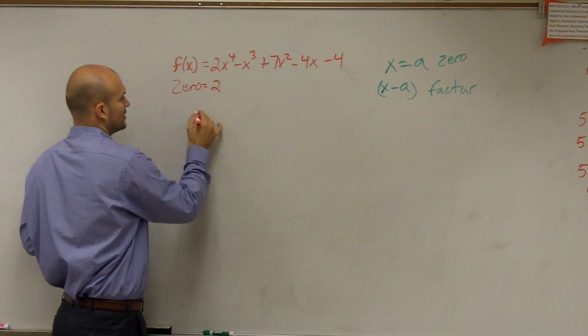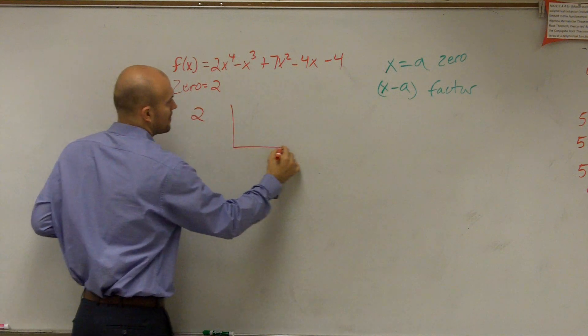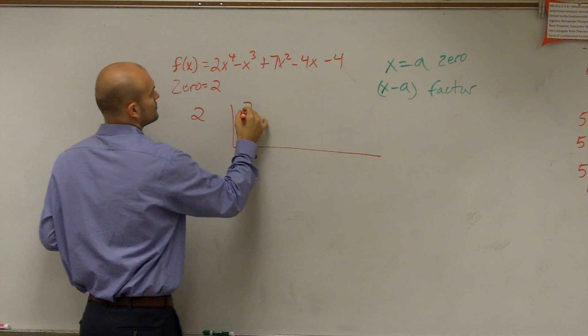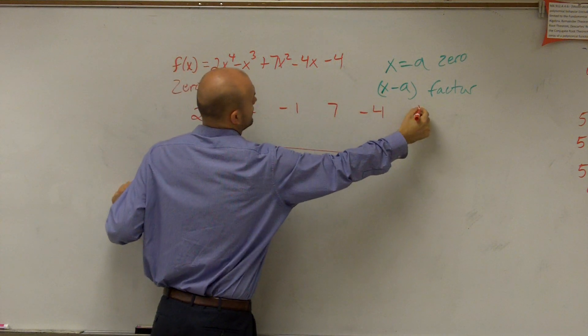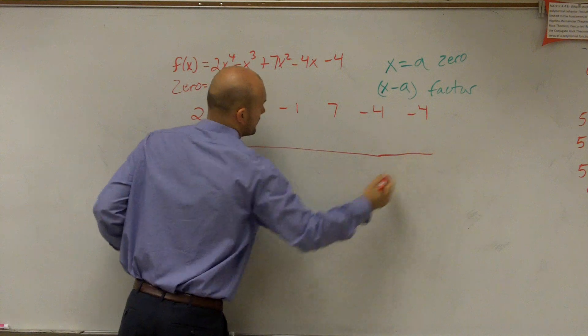What would you do? You'd do synthetic division with that, right? You'd say, all right, Mr. McLogan, well, that's a zero. So that's 2. And then you do 2, negative 1, 7, negative 4, negative 4. Right?